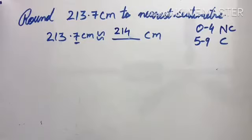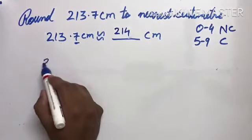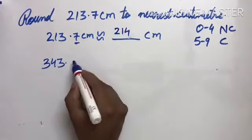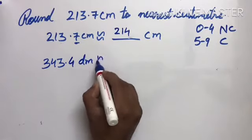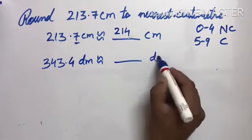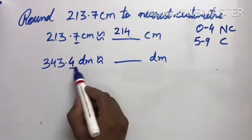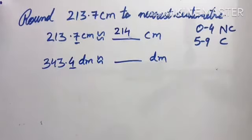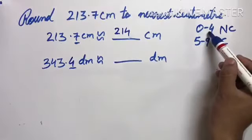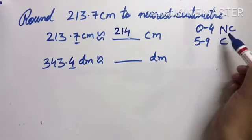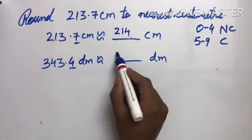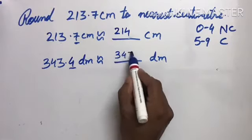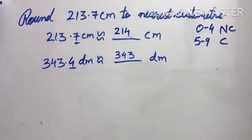Now we have 343.4 decimeter to nearest decimeter. We check the digit after the point, which is 4. 4 falls in 0 to 4 range, so no change. The 3 stays as 3. So the answer is 343 decimeter.